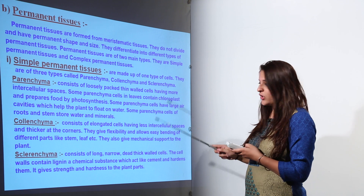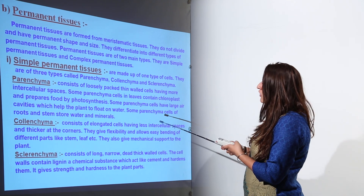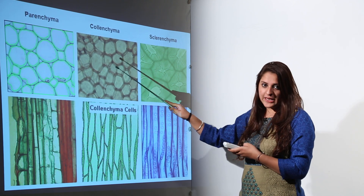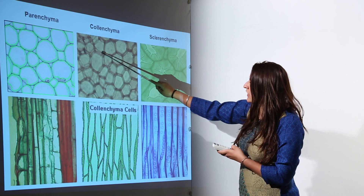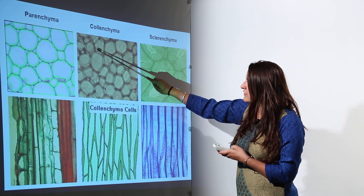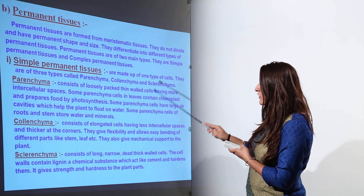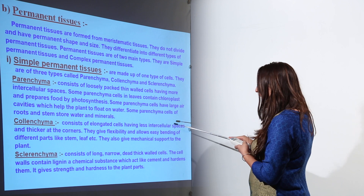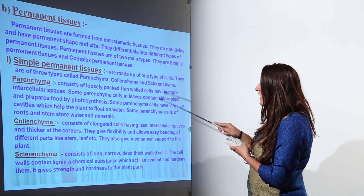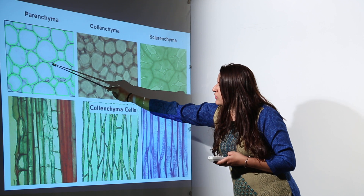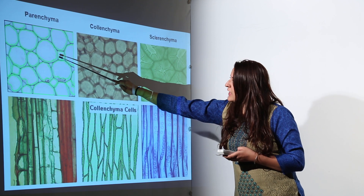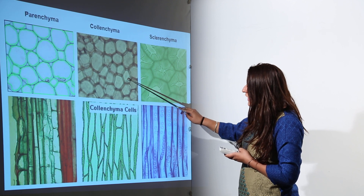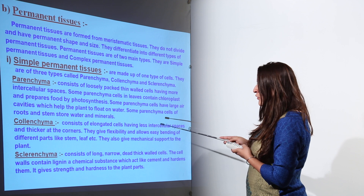Colenchyma are also a type of cell similar to parenchyma but are slightly more elongated. The main difference is that colenchyma have thick cell walls, not thin ones. They also have less intercellular space — unlike parenchyma cells where intercellular spaces are present between adjacent cells, intercellular spaces between colenchyma cells are essentially absent.